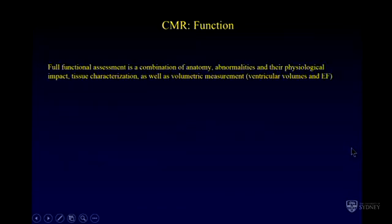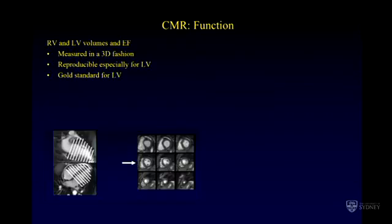Turning to function — obviously function is made up of quite a few parameters including anatomy, the abnormalities and their physiological impact on the heart, and tissue characterization. But one of CMR's good uses is for volumetric assessment, that is for ventricular volumes and ejection fraction. It measures volumes and ejection fraction in a 3D fashion by taking a stack of contiguous slices in the short axis orientation from the base of the LV to the apex. It is very reproducible, especially for the LV, and is currently the gold standard for left ventricular assessment.